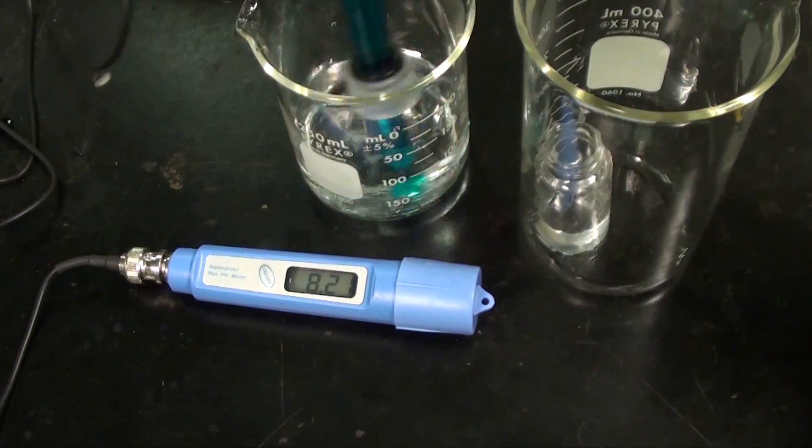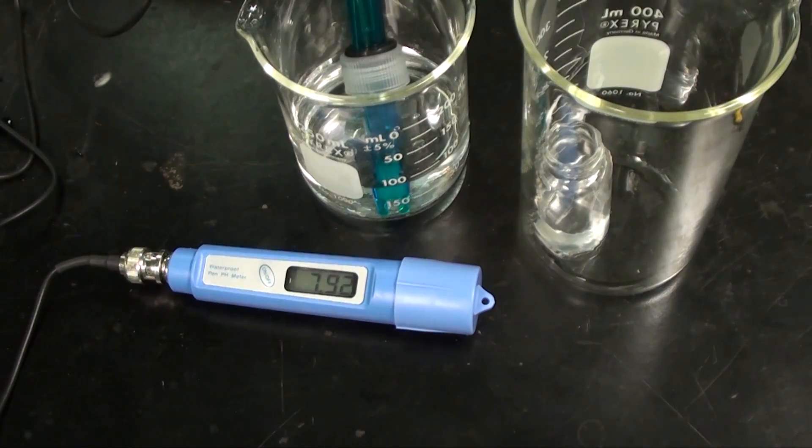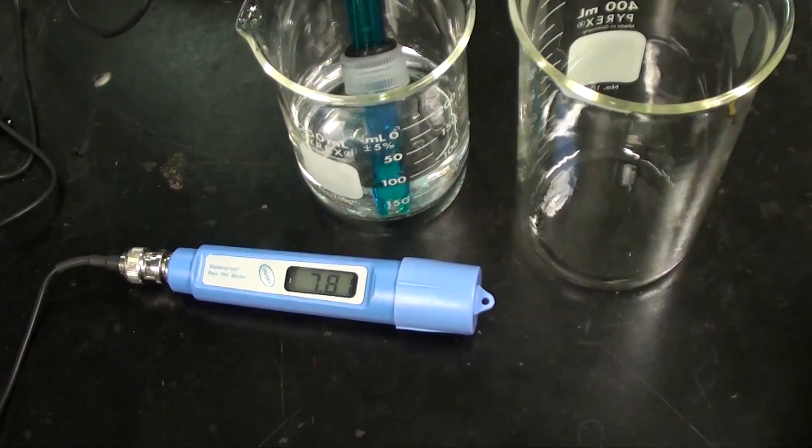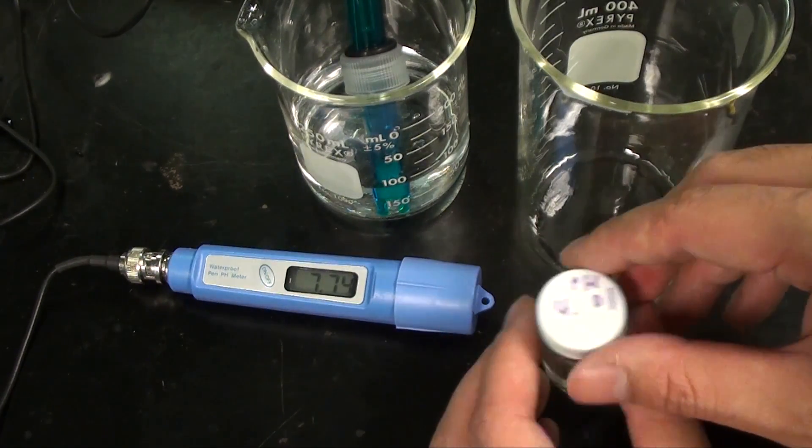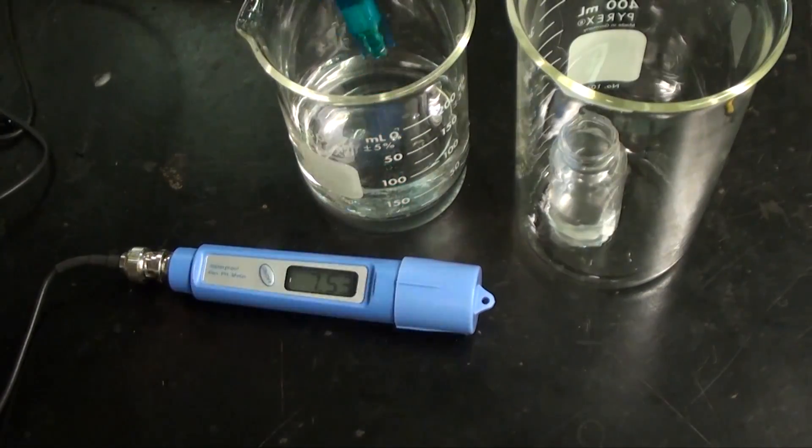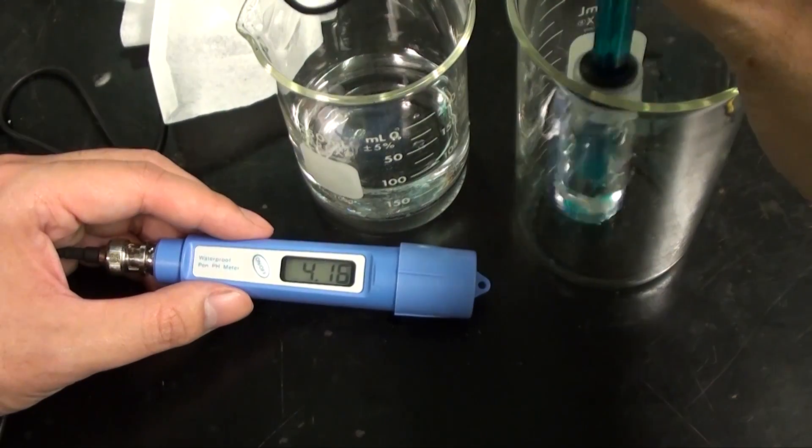What about other points? Let me get a different pH calibration solution and see if the measurement is correct. This solution has a pH of 4.01. As you can see here the pH meter says it's off.